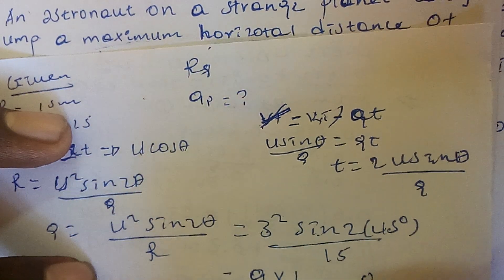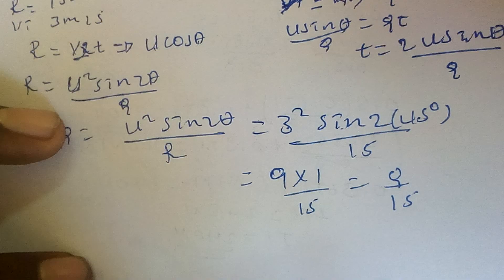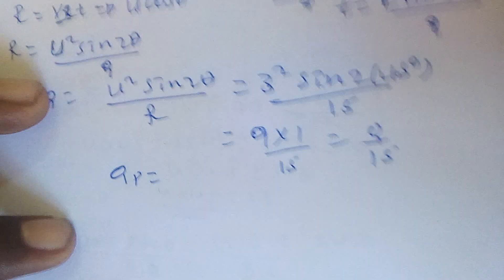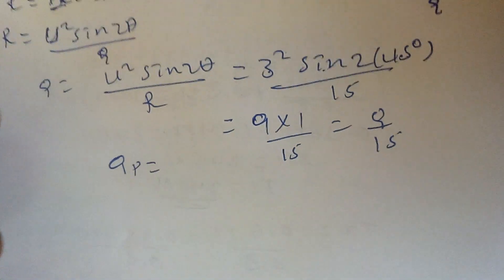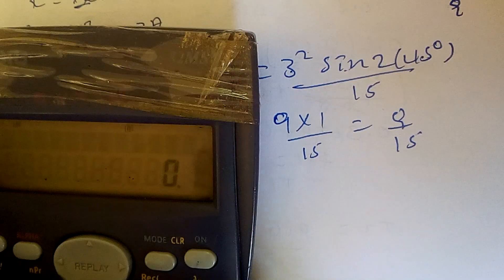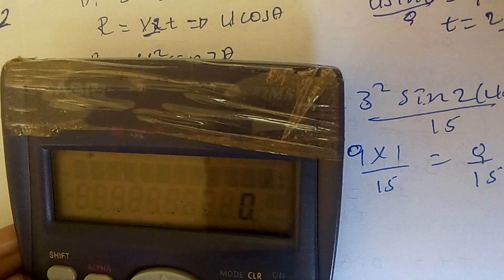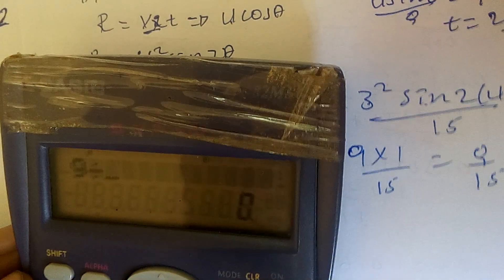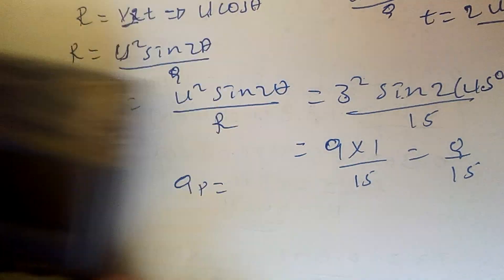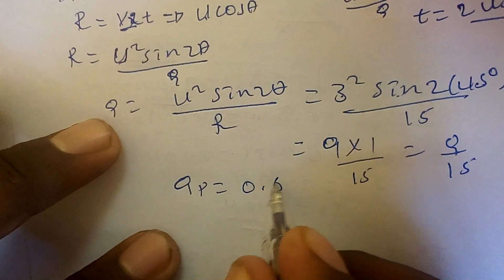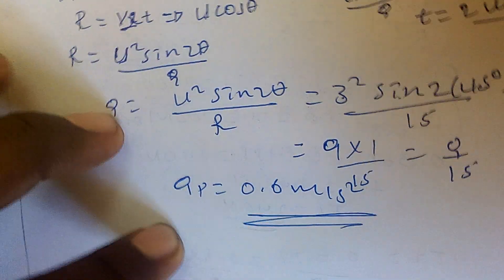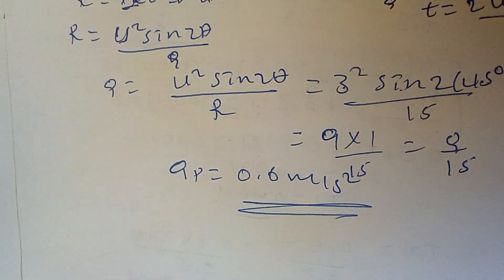So gravity of the planet is equal to u² sin 2θ over range. The answer is approximately 0.9 meters per second squared. Thank you for watching the video, please subscribe to my channel.